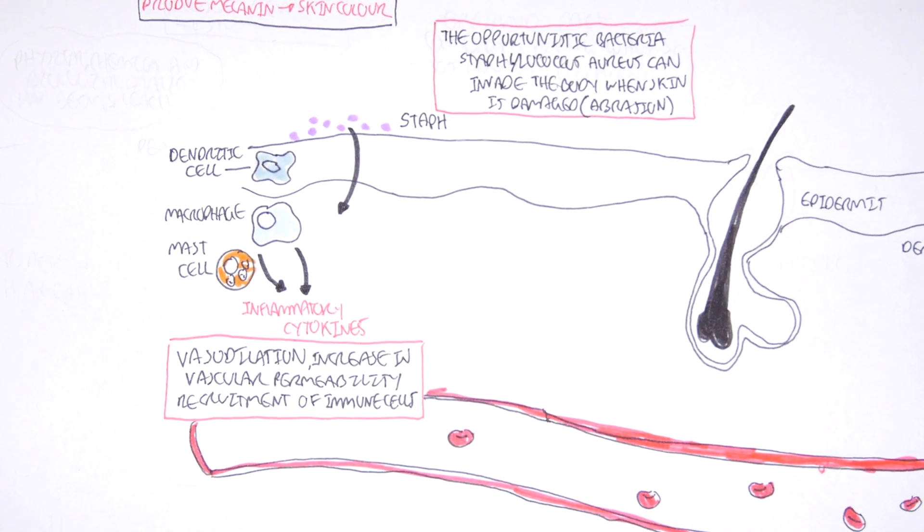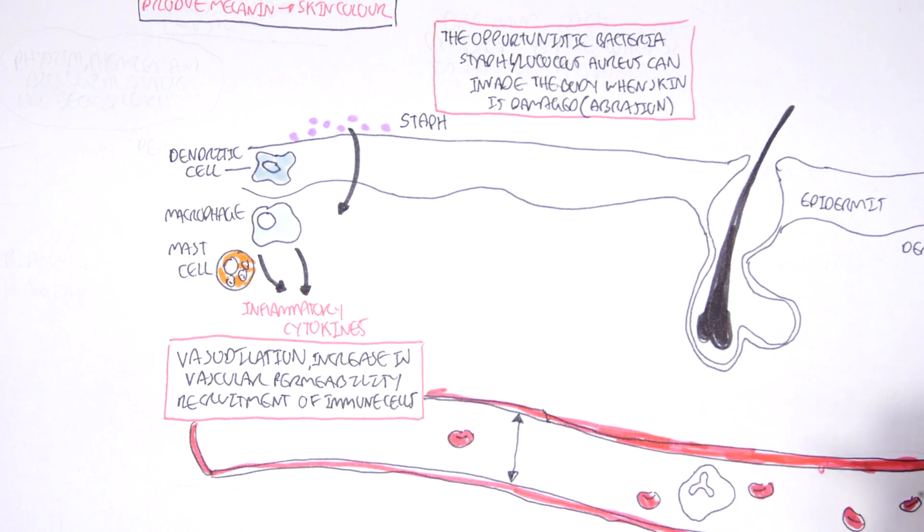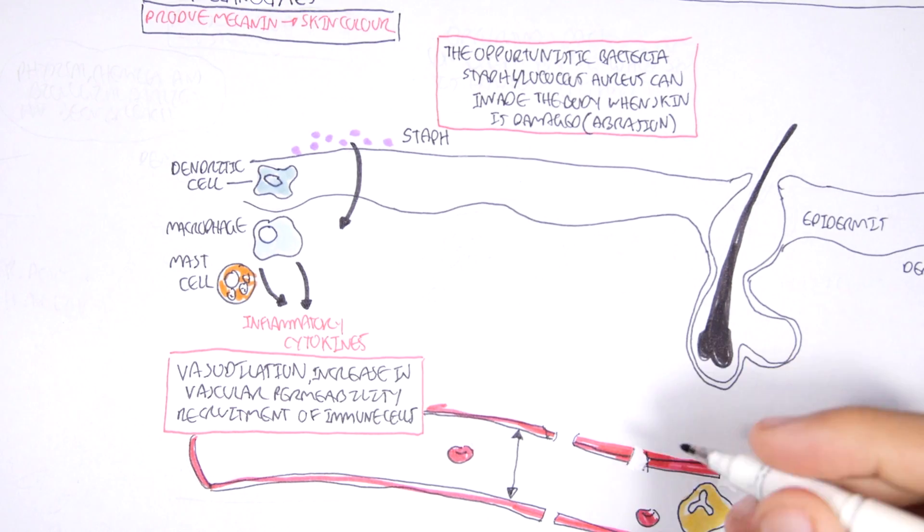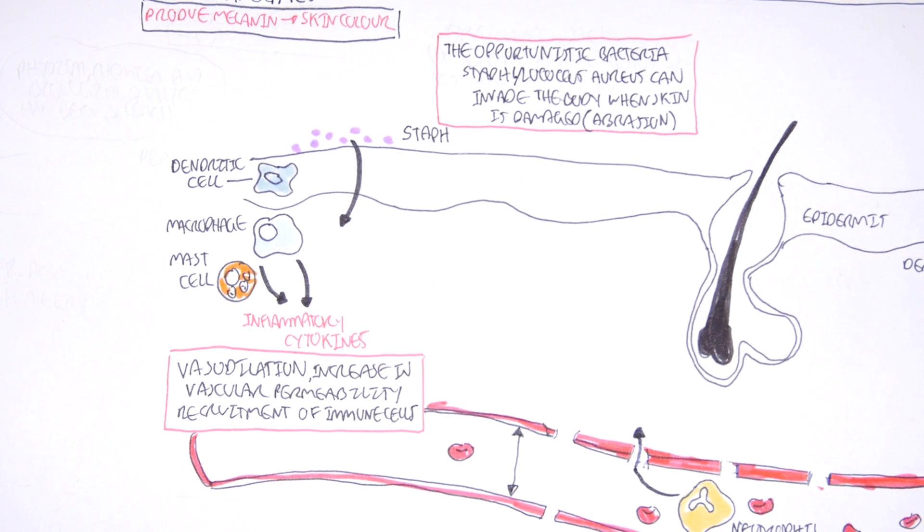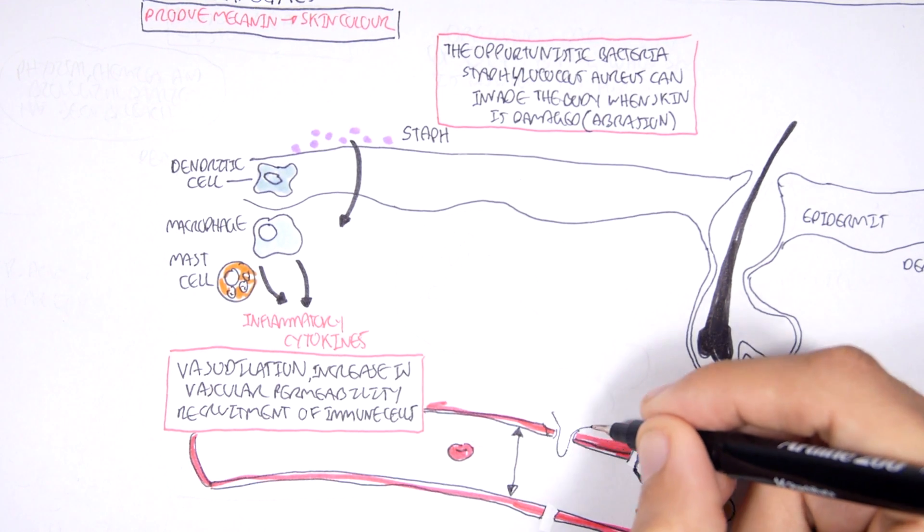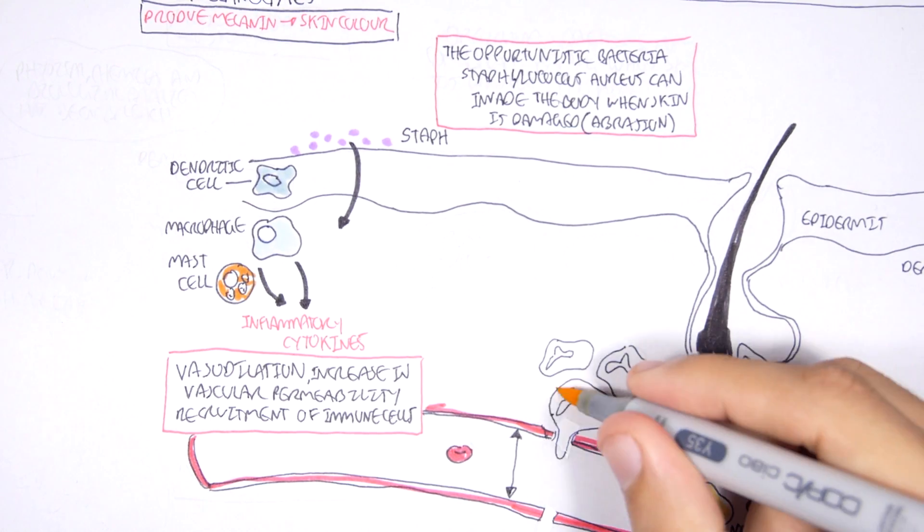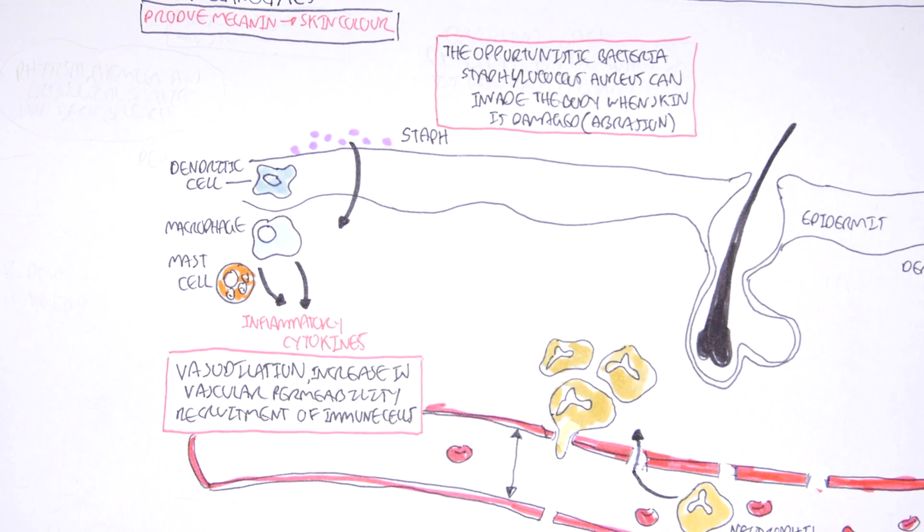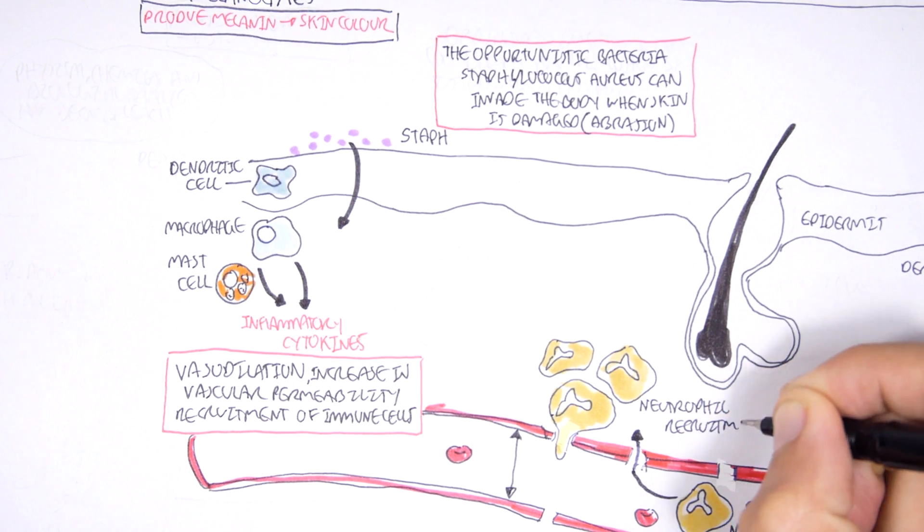So here in the blood vessel we have vasodilation. Within the blood vessel we have normally neutrophils circulating around the body. So when there's an increase in vascular permeability here and there's like a chemotactic effect, the neutrophils will enter this tissue area of invasion and try to help the other immune cells. So here we have now many neutrophils in the area, and they're coming like an army that will try to destroy the bacteria.